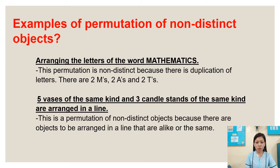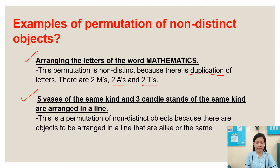Examples of permutation of non-distinct objects. Number one: arranging the letters of the word MATHEMATICS. This permutation is non-distinct because there is a duplication of letters — there are two M's, two A's, and two T's. The second example is five vases of the same kind and three candles of the same kind arranged in a line. This is a permutation of non-distinct objects because there are objects arranged in a line that are alike or the same.